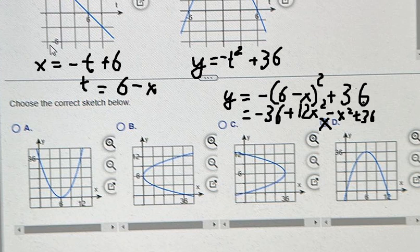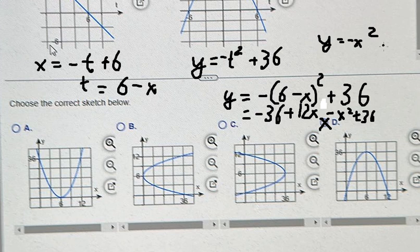And this one, we simplify 36 minus 36. We have negative x squared plus 12x.